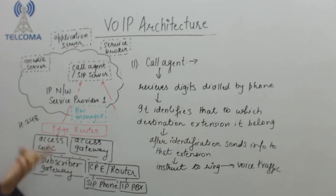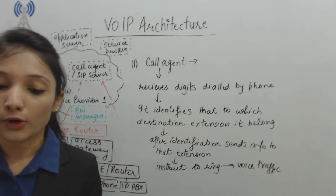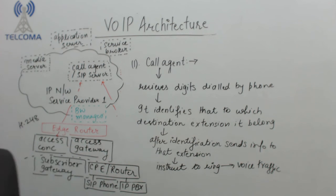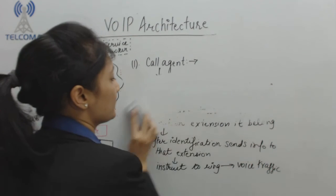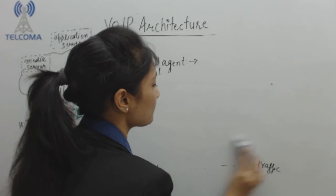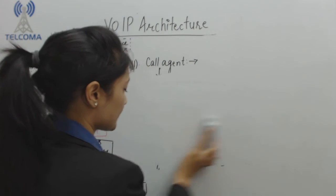When the user answers, voice traffic is being exchanged between the two phones. So the call agent is the central processor of the VoIP system. This is the function of the call agent. Next we have the SIP server, also called the SIP proxy.